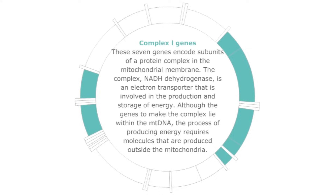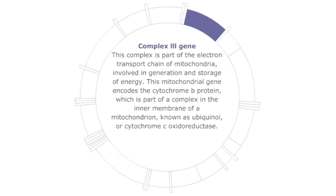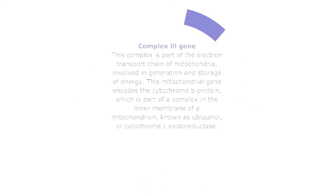Though the genes lie in mitochondrial DNA, the process of producing energy requires molecules that are produced outside of mitochondria. Complex 3 genes: this mitochondrial gene encodes cytochrome B protein, which is part of the inner membrane of mitochondria, known as ubiquinol or cytochrome C oxidoreductase.